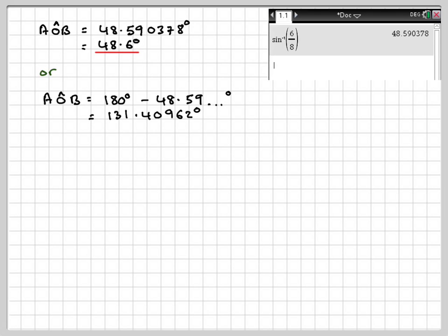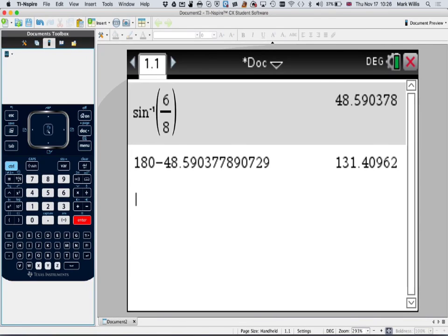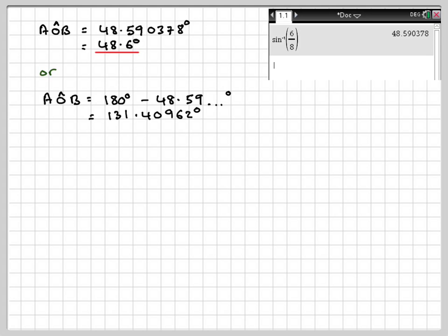I'll just jump over to the calculator to show how to do that, so what you do is you put in 180, and minus, and all you need to do is control answer, enter, and that will give you the answer. I'll just write down the full calculator value, and then round it off to one decimal place.